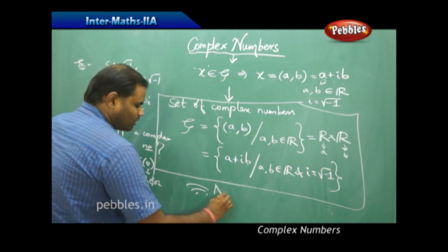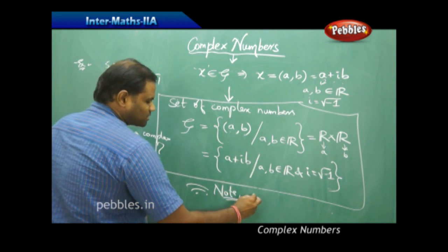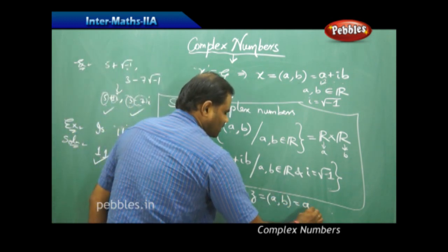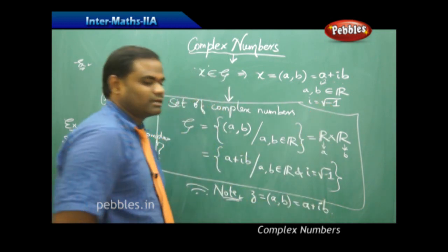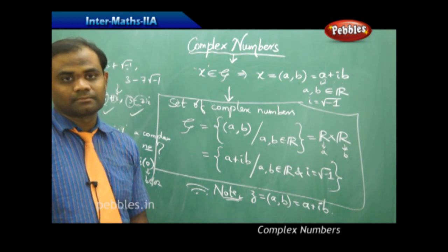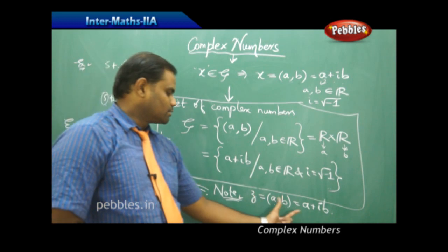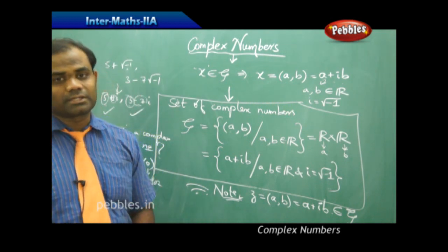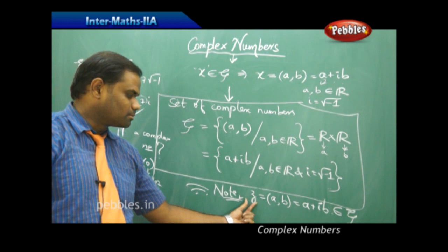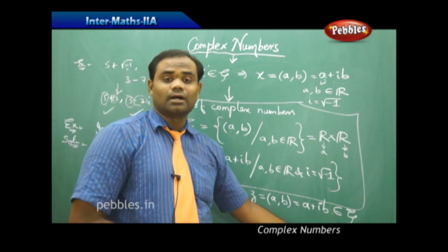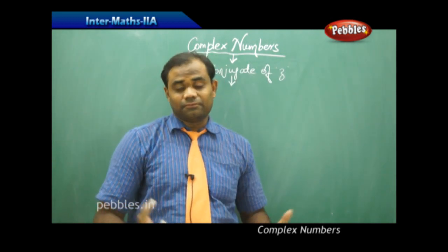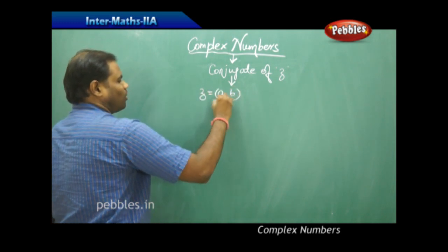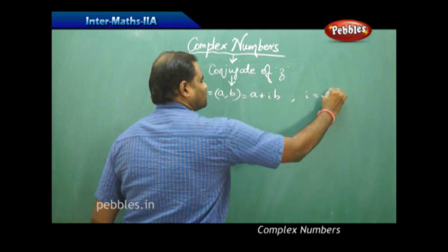An important note: complex numbers are generally denoted by z. So z implies (a, b) or a + ib. With this definition, z belongs to C, and we construct various properties of complex numbers. The complex number z is in the form a + ib where a and b are real numbers and i = √(−1).